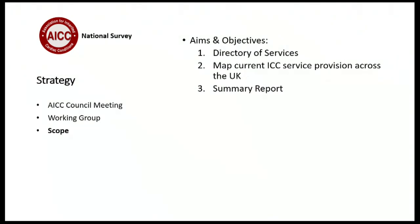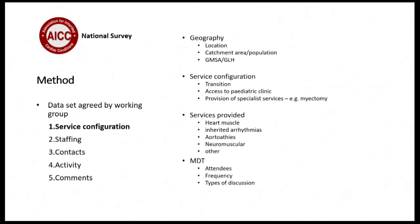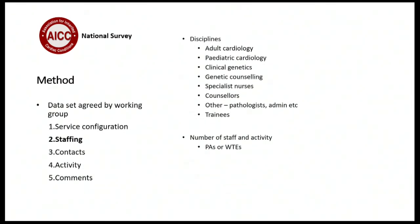Five data domains were identified for the survey, kept simple in an Excel spreadsheet format. The first domain covers service configuration: geography, location, which Genomic Medicine Service Alliance or Genomic Laboratory Hub the centre is affiliated to, transition services, access to paediatric clinics, and services provided including aortopathy and neuromuscular services. The second covers MDT structure, attendees, and meeting frequency. Staffing data is also being collected.